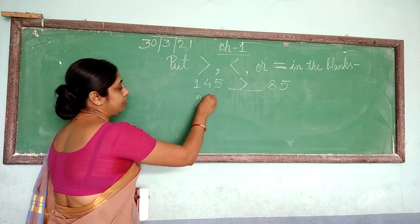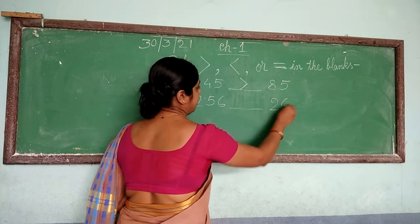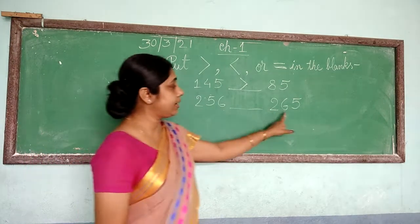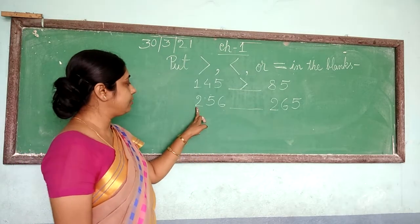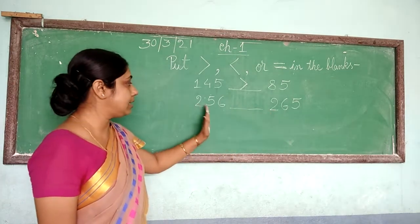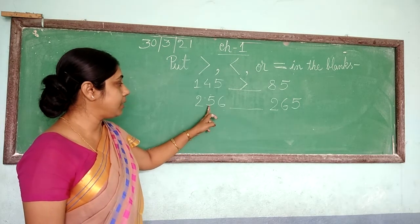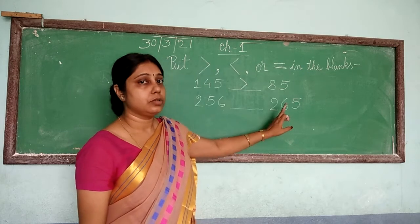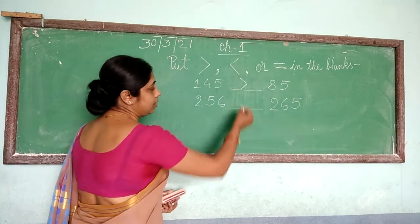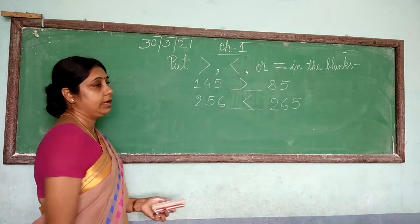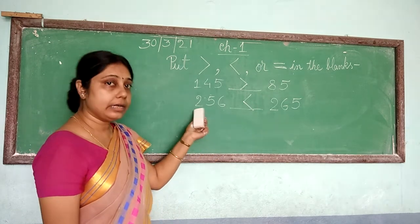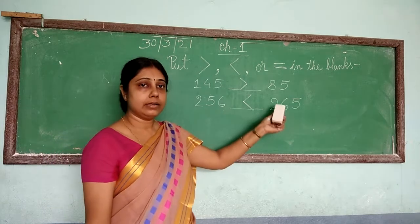Now let us take 256 and 265. Both sides have 3 digits. The first digit: 2 here, and here also 2 — both sides are the same. Now we look at the second digit: in the tens place, 5 is there on one side and 6 is there on the other. So that side — 265 — is greater. We put the less than sign here. So we say: 256 is less than 265.